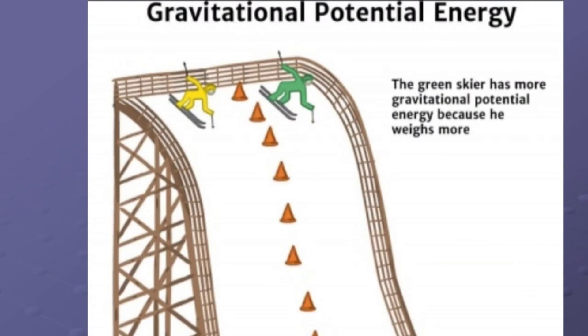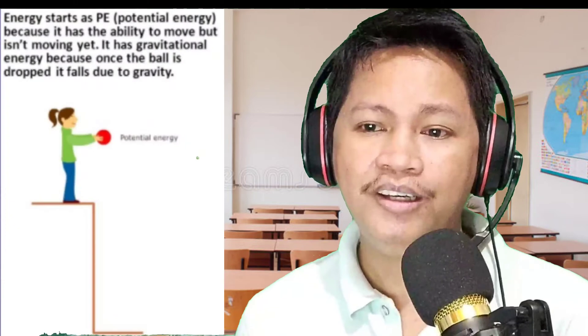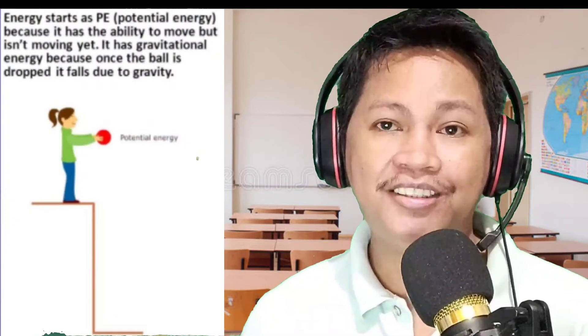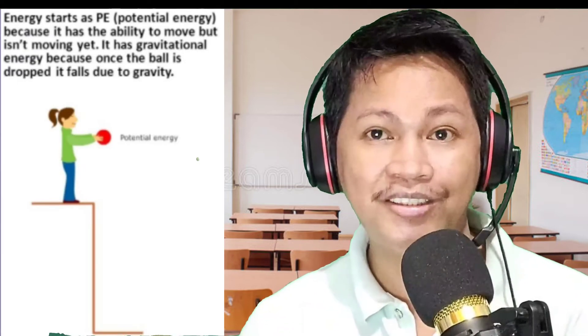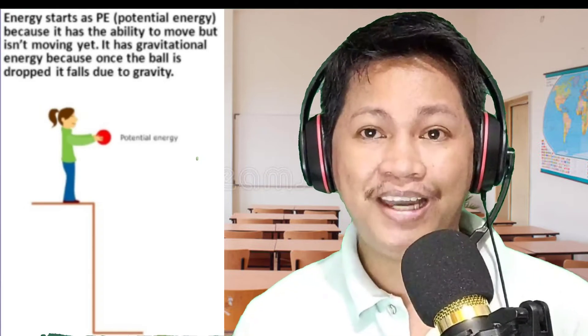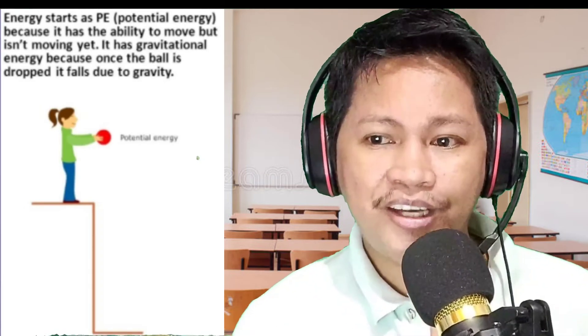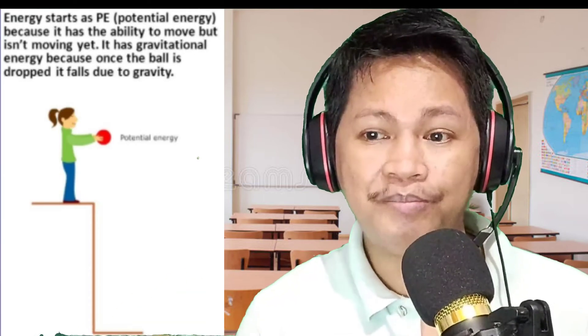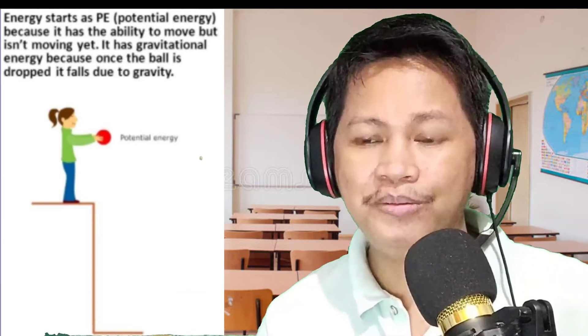Here are some examples that describe gravitational potential energy. In one picture, the green skater has more gravitational potential energy because he weighs more. In another picture, a girl is holding a ball — the energy starts as potential energy at the moment she holds the ball, because it has the ability to move but isn't moving yet. It has gravitational potential energy because once the ball is dropped, it falls due to gravity.